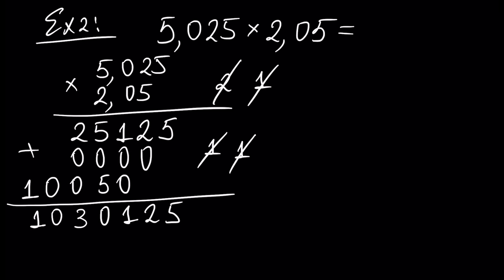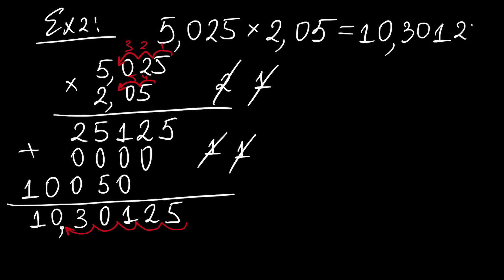Now we calculate the sum of decimal places in our factors: one, two, three, four, and five. We have five decimal places in our product. So let's count: one, two, three, four, and five. Our decimal point is here. So this is the answer, and the result of our multiplication is 10.30125.